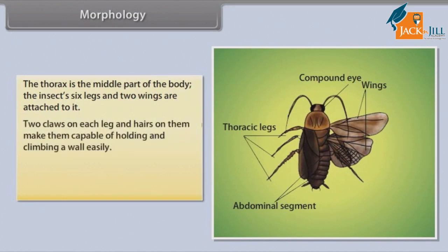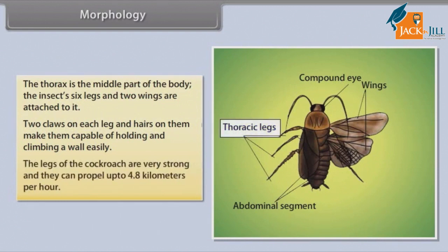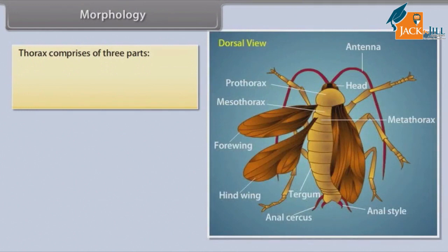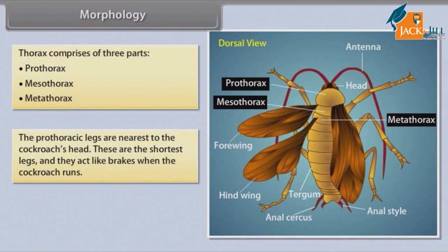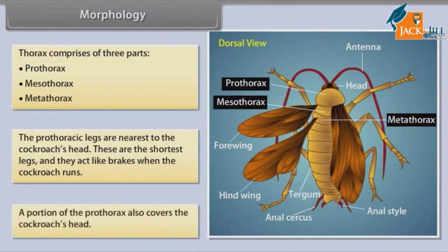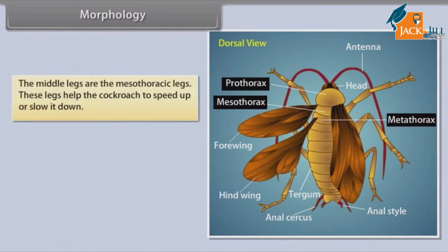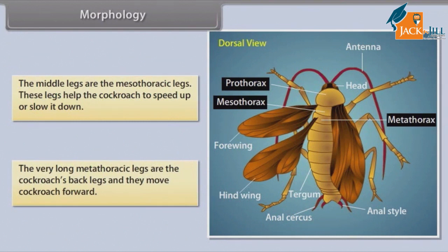Claws on each leg and hairs on them make cockroaches capable of holding and climbing a wall easily. Their legs are very strong and they can propel up to 4.8 kilometers per hour. The thorax comprises three parts: prothorax, mesothorax, and metathorax. The prothoracic legs are nearest to the head — the shortest legs — and they act like brakes when the cockroach runs. The mesothoracic legs help the cockroach speed up or slow down. The very long metathoracic legs are the back legs and they move the cockroach forward.